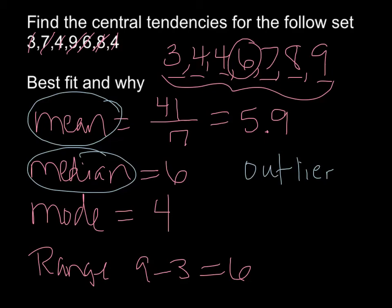Because if you look, 5.9 is pretty close to the middle. And then even your median is directly in the middle. So those two are going to be good measures of the central tendencies for this set of data.